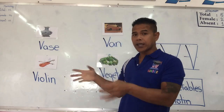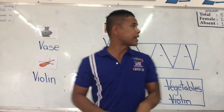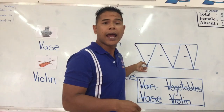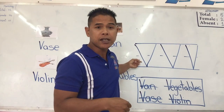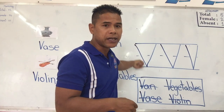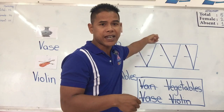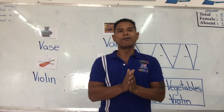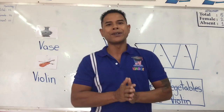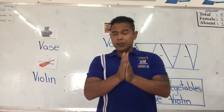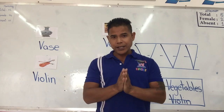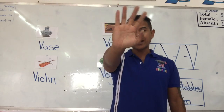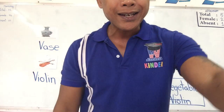That brings us to the end of our lesson on things that start with the letter V and how to write the big V. That brings us to the end of our lesson. I will see you in the next lesson. Bye-bye.